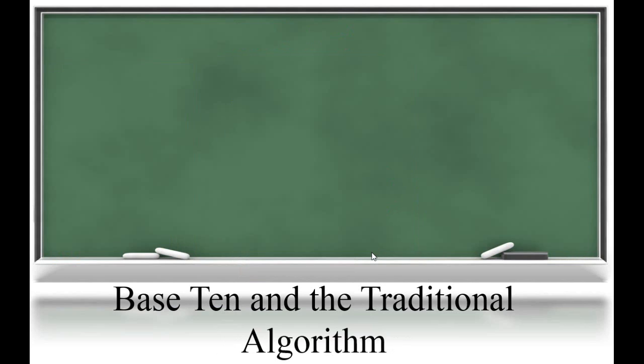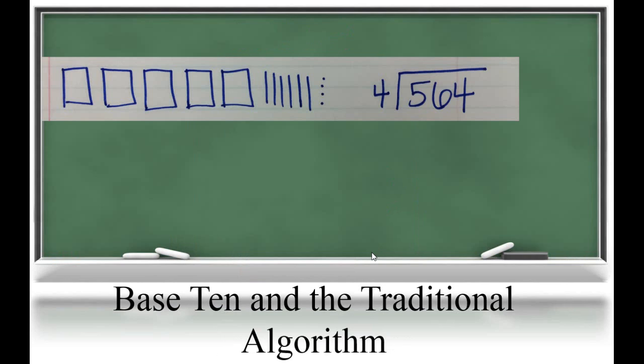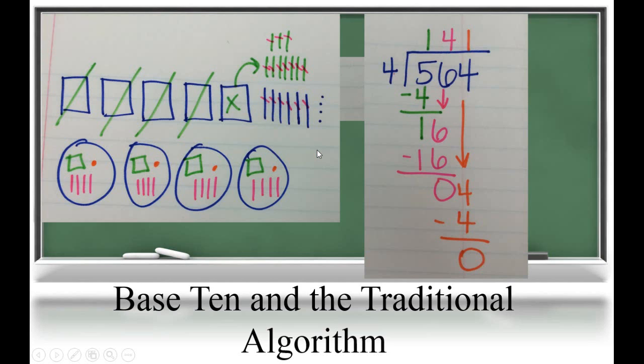Our final method of division is using base 10 and tying it to the traditional algorithm. So, let's go ahead and set up our division problem. We have 564 divided by 4. So, we have 500, 6 tens, and 4 ones. And we are going to put them into 4 equal groups.